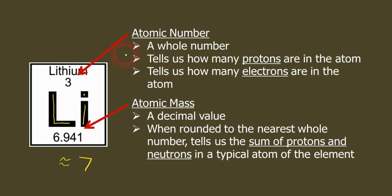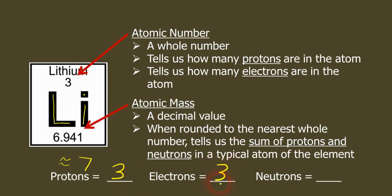So what that means is, protons will be this number. Electrons will be that number. Well, to find the neutrons, you have to take the 7 and subtract 3. And so if we were to do this little exercise here, we could fill this in pretty easily and say that an atom of lithium has three protons. That's the atomic number. It has three electrons. That's the atomic number. The neutrons will be 7 minus 3, which is equal to 4. And so a typical atom of lithium has three protons, three electrons, and four neutrons.